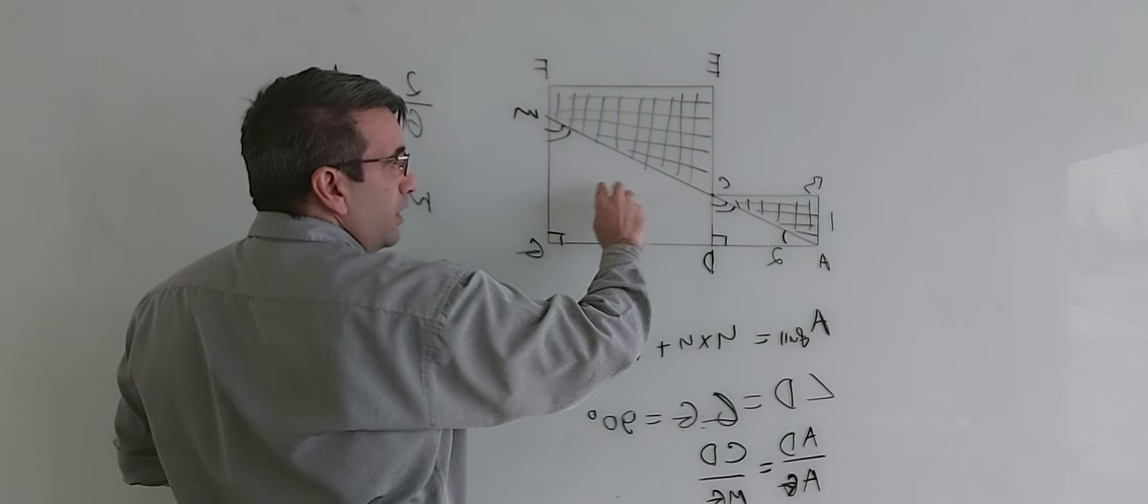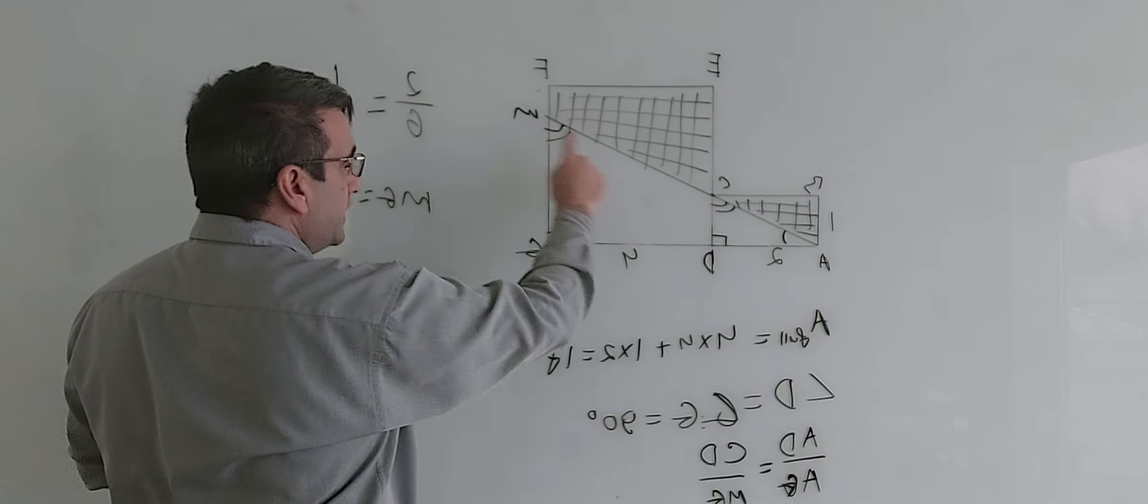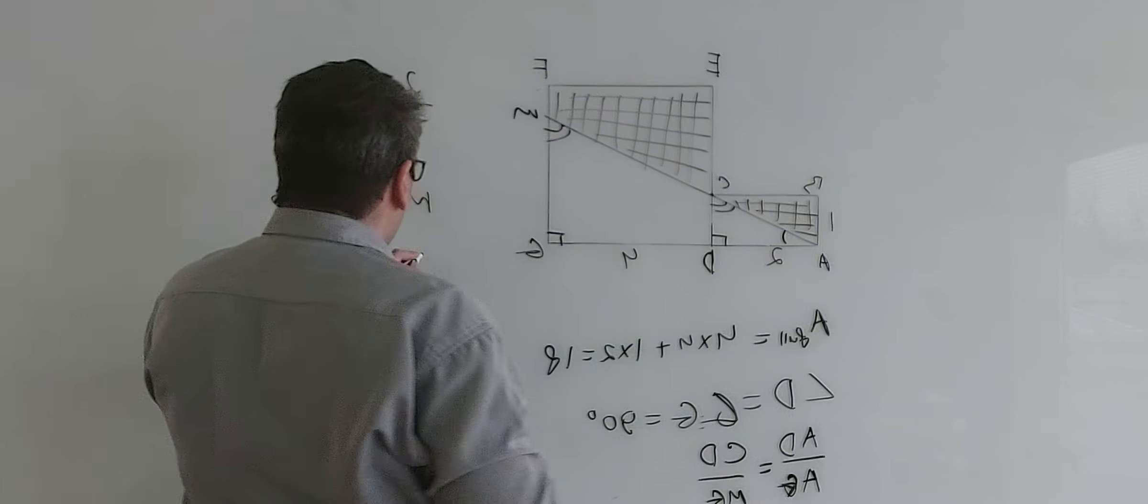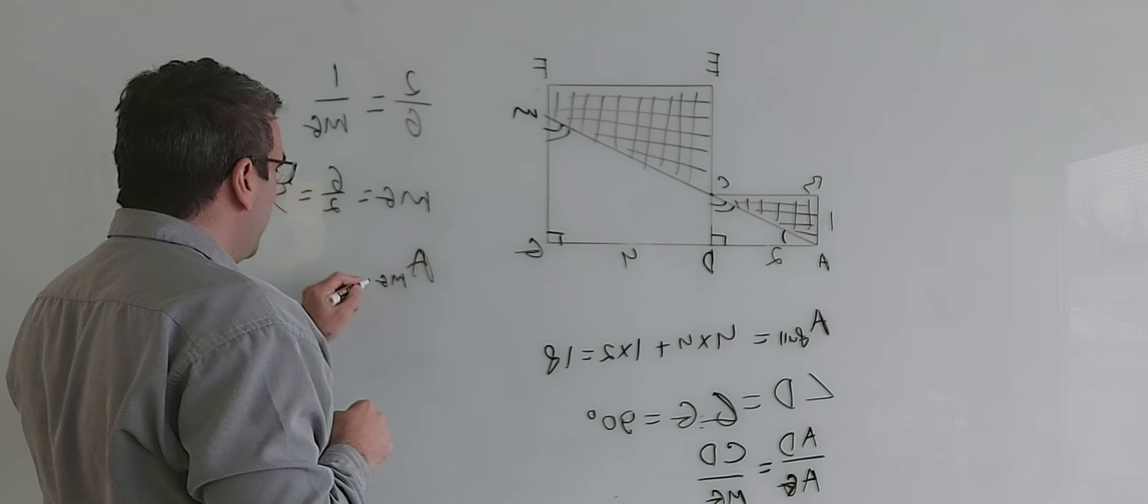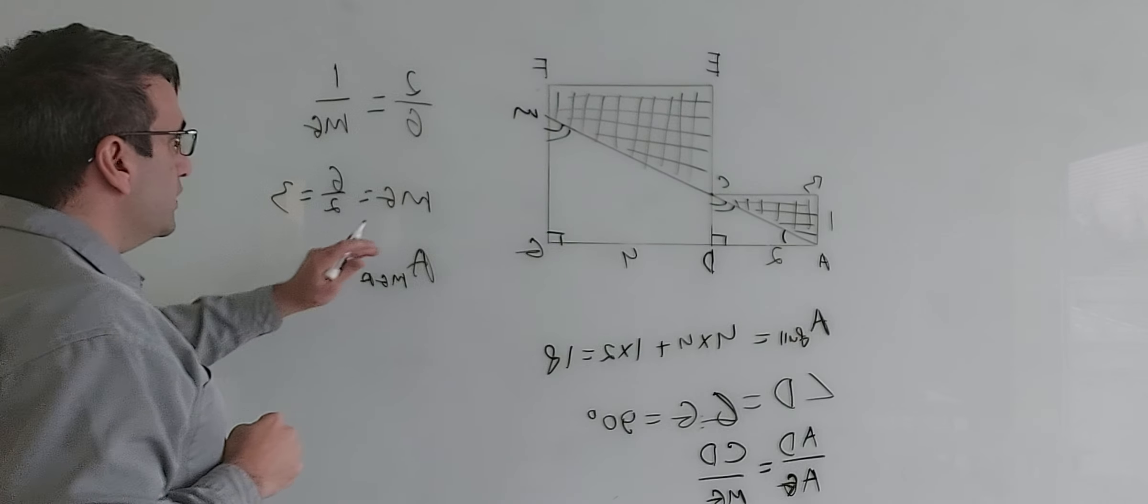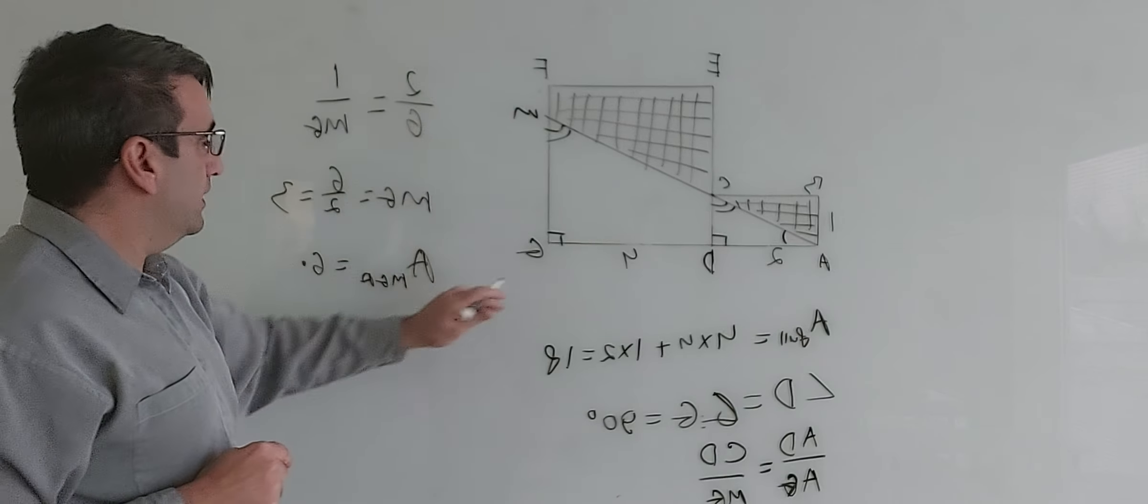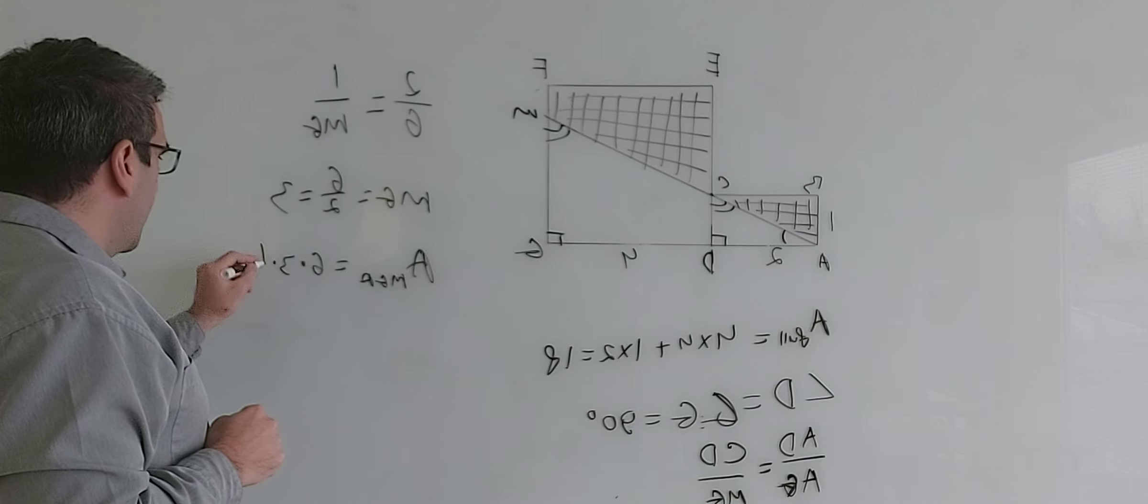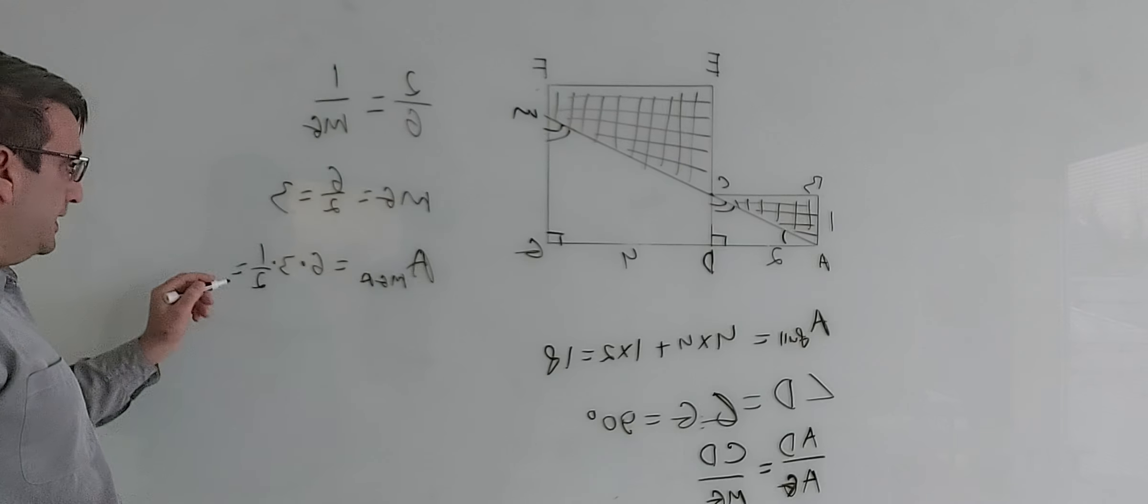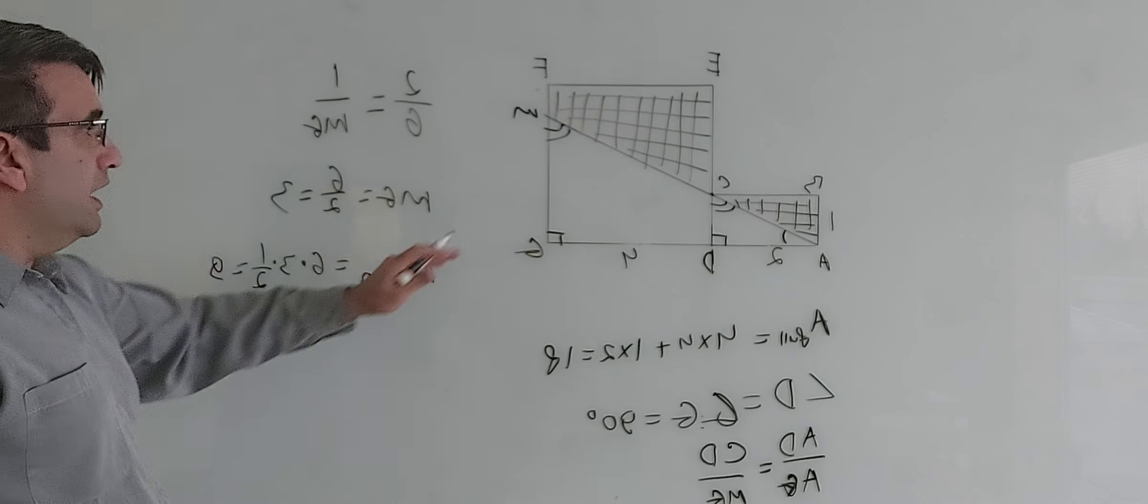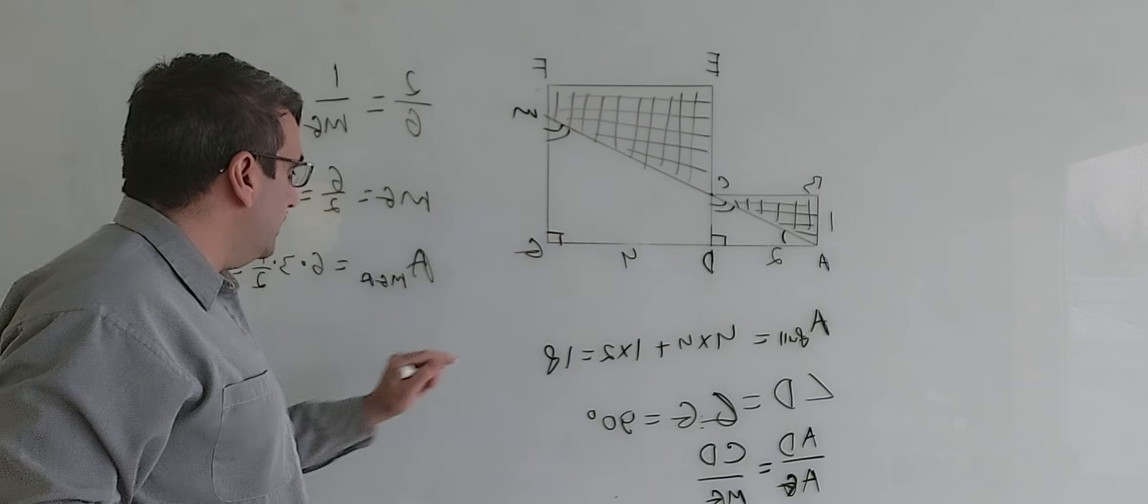We have triangle MAG, so area of triangle MGA equals base which is 6 times height which is 3 times half, so it equals 6 times 3 is 18, half is 9.